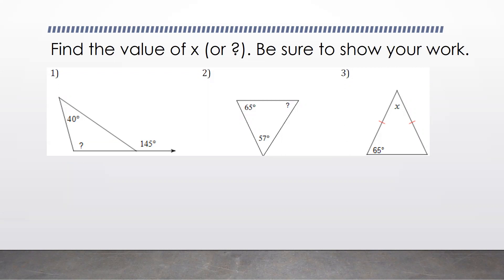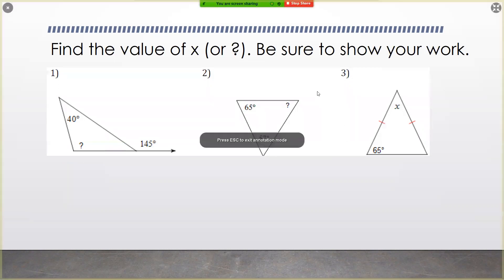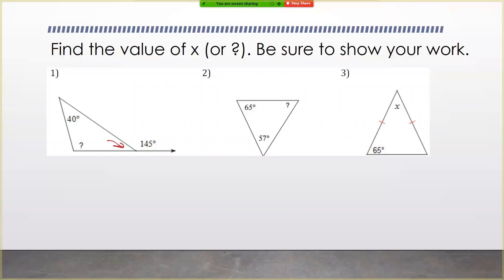For the first one, we have two different things we could use to figure out the value of the angle the question mark is. You could start off by finding this angle in here because we know that that angle and the 145 degree angle are supplementary. So if I take 180 minus 145 I get 35.